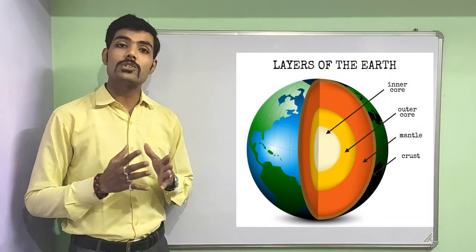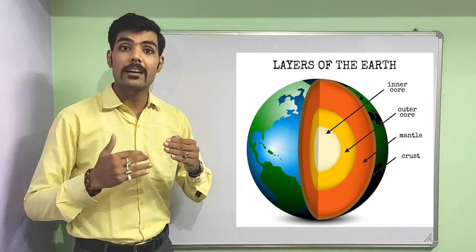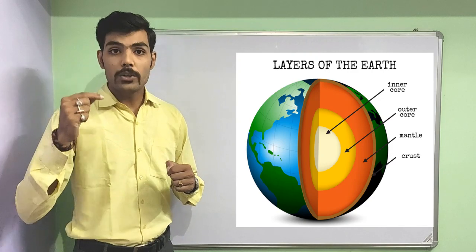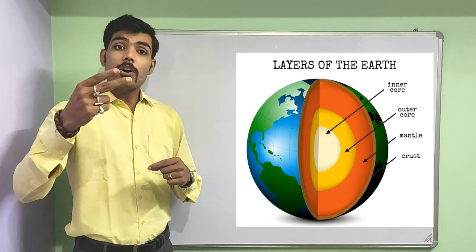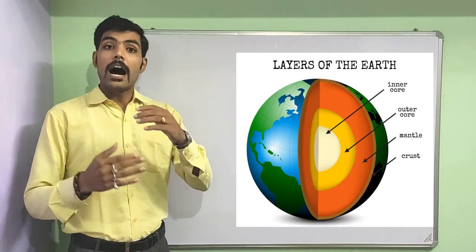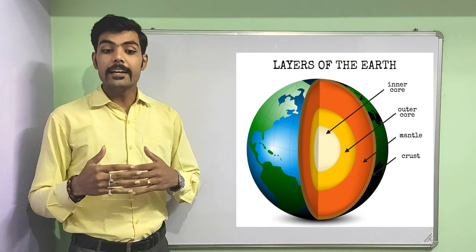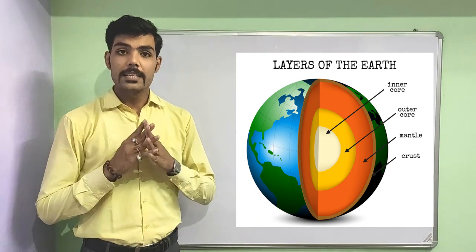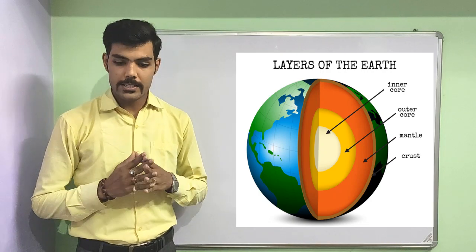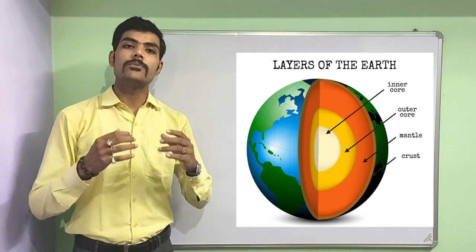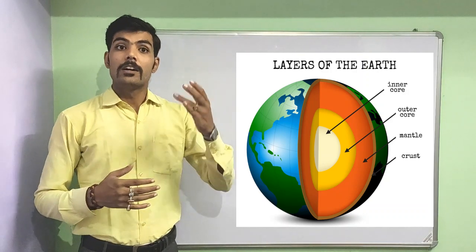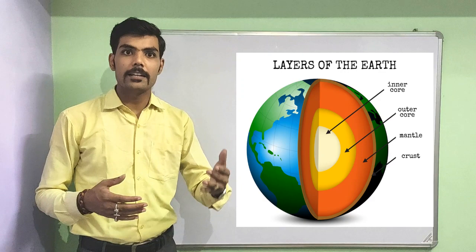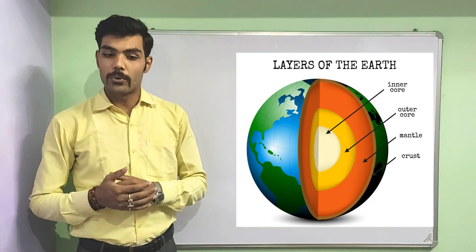Same way our earth is also made up of various concentric layers that is crust, mantle and core. These all concentric layers are further divided with the discontinuity. Now what is this discontinuity? Discontinuity is the transition zone which divides one layer of the earth with another. Like the crust is divided from the mantle through this discontinuity and the mantle is divided from the core.